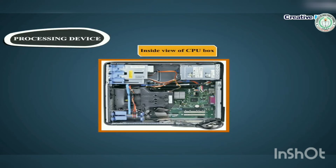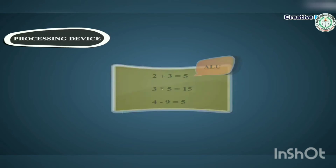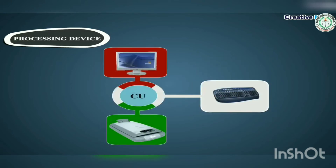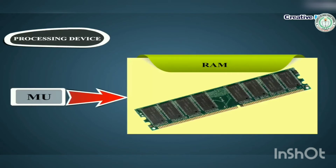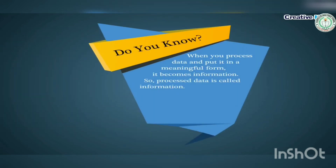The CPU has three parts: ALU (Arithmetic and Logic Unit), which does all the calculations; CU (Control Unit), which controls all the activities of the computer and tells other parts what they should do; and MU (Memory Unit), which stores data and information temporarily. Do you know? When you process data and put it in a meaningful form, it becomes information. So, processed data is called information.